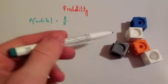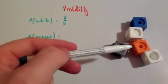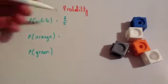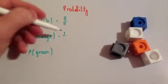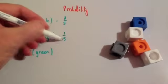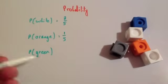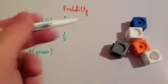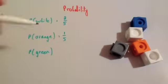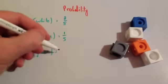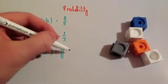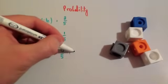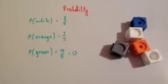For white, there's one successful outcome out of five cubes altogether, so one out of five. And the probability of green — well, there's no greens — so it would be equal to zero out of five. Alternatively you could just write that's equal to zero, because it's impossible.